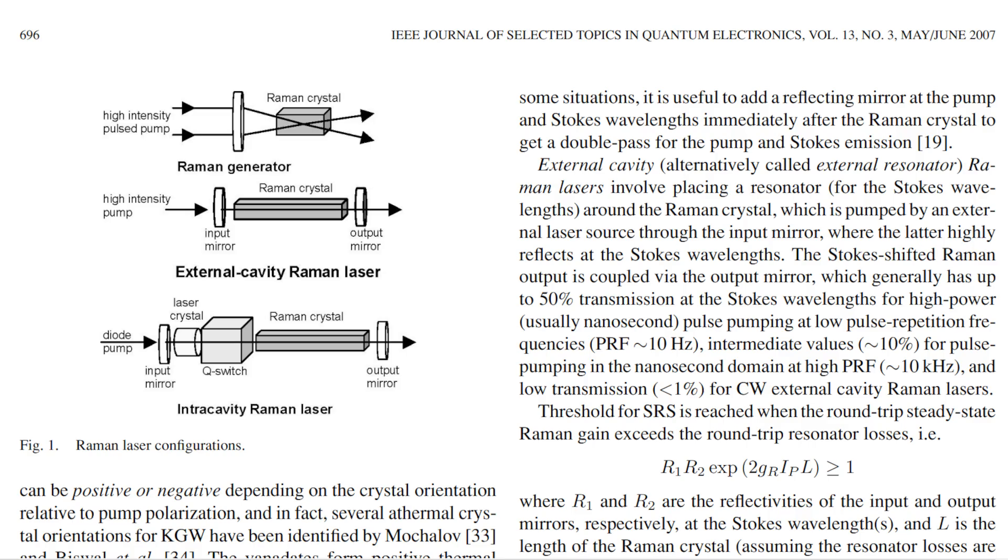Raman lasers are optically pumped by other lasers. However, this pumping does not produce population inversion as in regular lasers. Instead, pump photons are absorbed and re-emitted as lower frequency light photons by stimulated Raman scattering. The difference between the two photon energies is fixed and corresponds to the vibrational frequency of the gain medium.